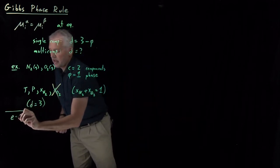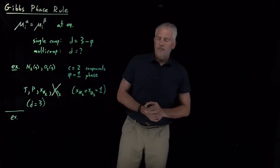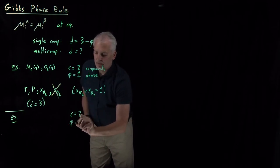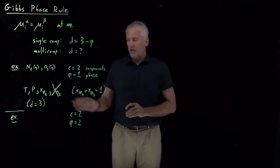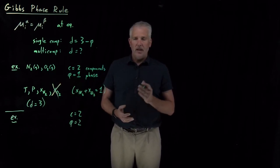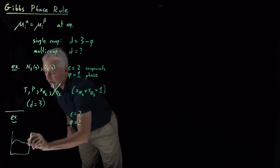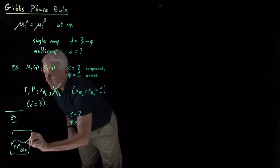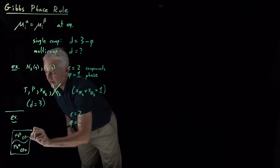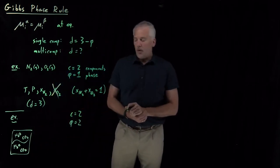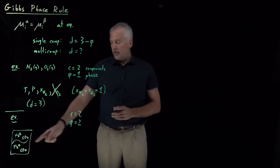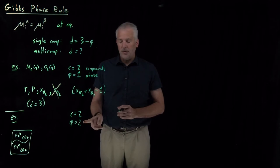Let's consider a slightly more complicated system — still two components, but now two phases: a liquid and a gas at the same time. The system is carbonated water, or soda water. I've got water in the liquid phase in equilibrium with its vapor, CO₂ dissolved in the liquid phase, and also a pressure of CO₂ in the gas phase above the surface. So it's a two-component, two-phase system.